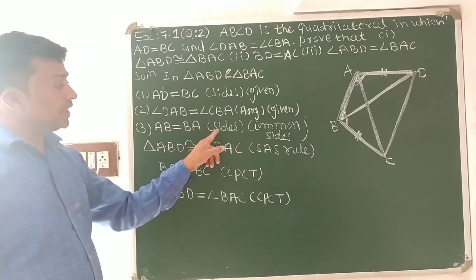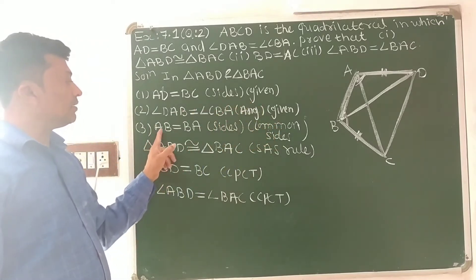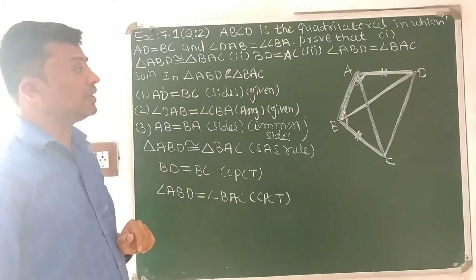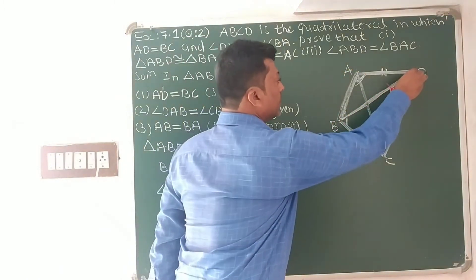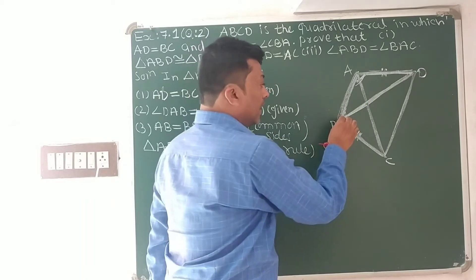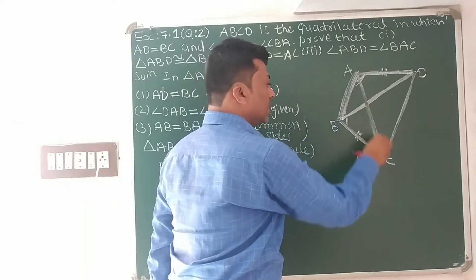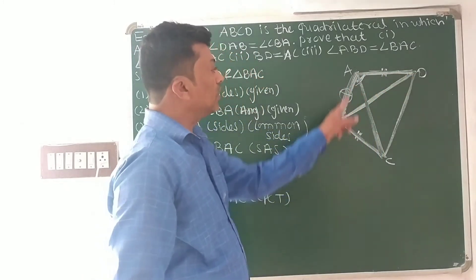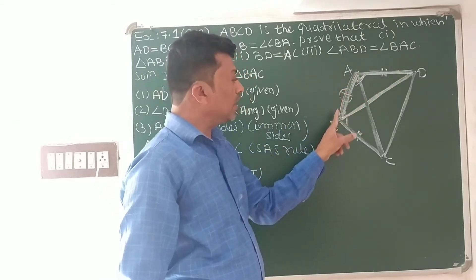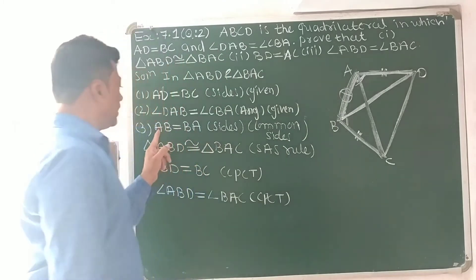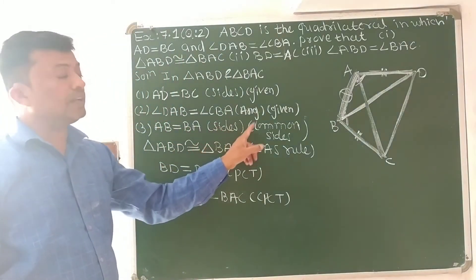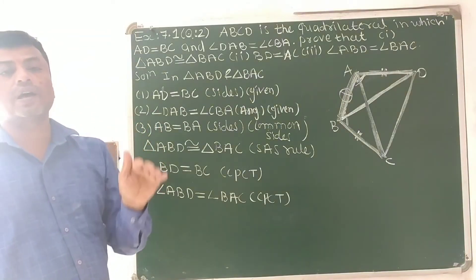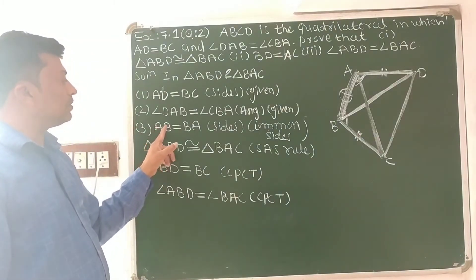Third, AB is equal to BA. They are sides and it is the common side. AB is equal to BA — it is the common side for both triangle ABD and triangle BAC. Side AB is common in both triangles, so we can write AB is equal to BA.